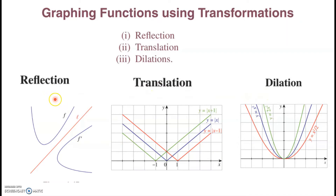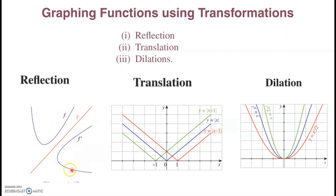For reflection, if f is the original function, then the line of symmetry forms a mirror image of this function. f' is the mirror image — that is called the reflection. For translation, let's say y = f(|x|) is the original function.